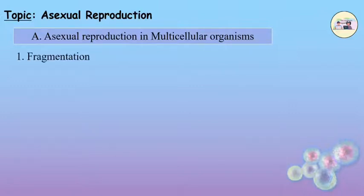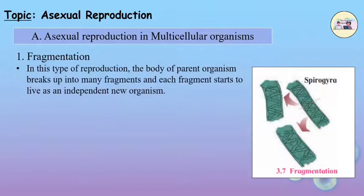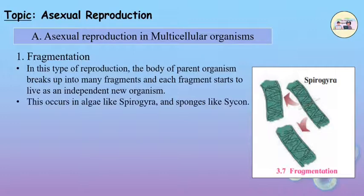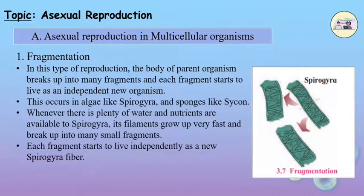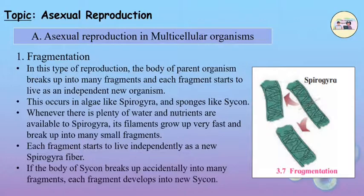Asexual Reproduction in Multicellular Organisms. 1. Fragmentation. In this type of reproduction, the body of the parent organism breaks up into many fragments and each fragment starts to live as an independent new organism. This occurs in algae like Spirogyra and sponges like Sycon. Whenever there is plenty of water and nutrients available to Spirogyra, its filaments grow very fast and break up into many small fragments, each living independently as a new Spirogyra filament. If the body of Sycon breaks up accidentally into many fragments, each fragment develops into a new Sycon.